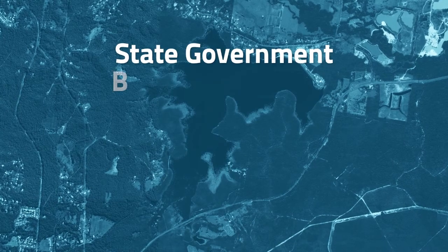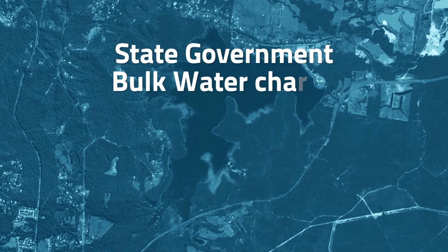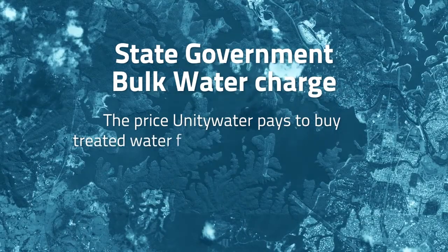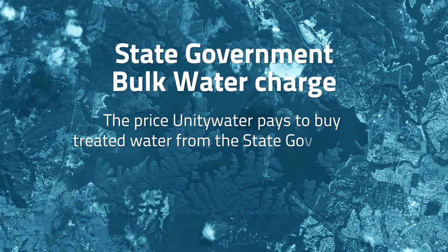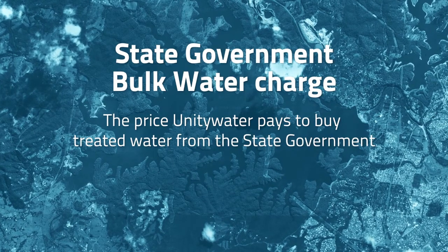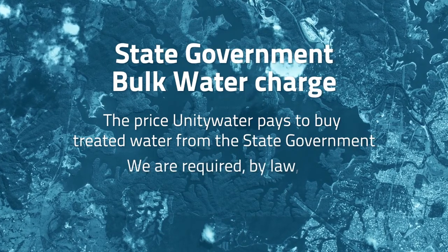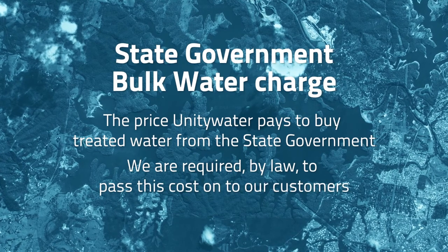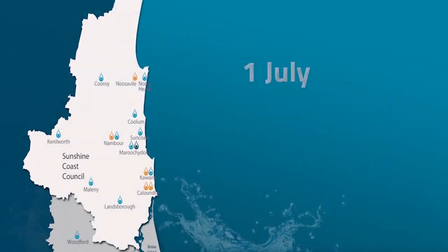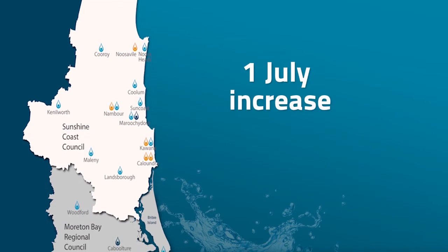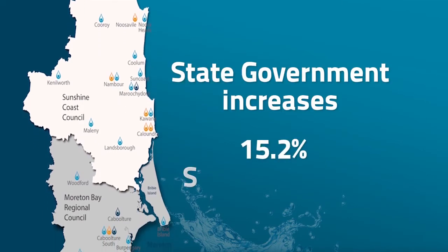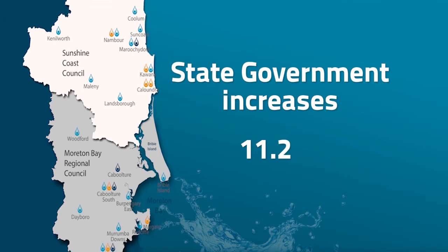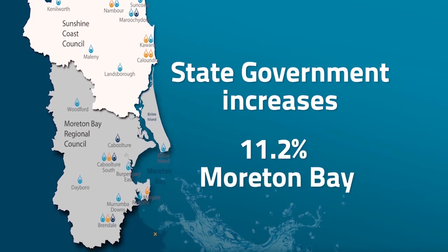The first is the State Government Bulk Water Charge. This is the price Unity Water pays to buy treated water from the State Government to supply to our customers, and we're required by law to pass this cost on in full to our customers. On July 1st, the State Government increased this charge by 15.2 per cent for Sunshine Coast customers and 11.2 per cent for Moreton Bay customers.